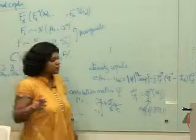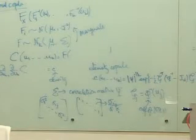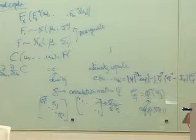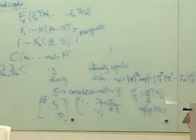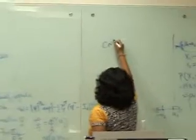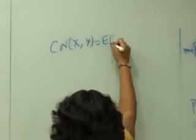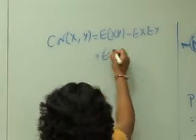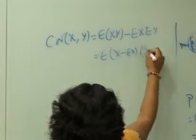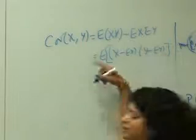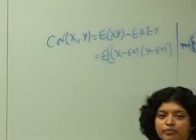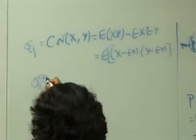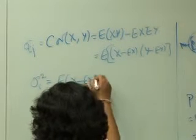The covariance sigma_ij is defined as the expectation of (X_i minus E[X_i])(X_j minus E[X_j]). So covariance is defined this way; sigma_i squared is the expectation of (X_i minus E[X_i]) squared, and sigma_j squared similarly. These were introduced when we were discussing the multivariate normal.